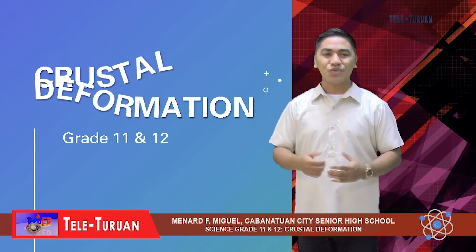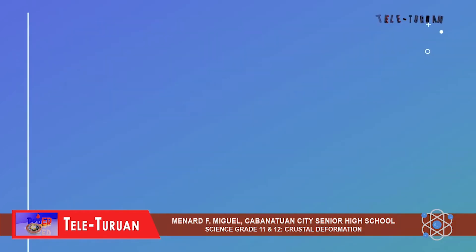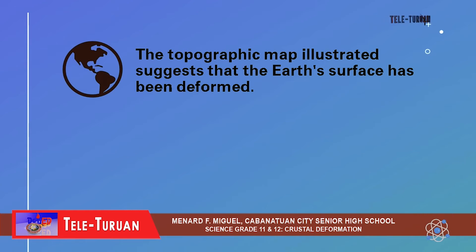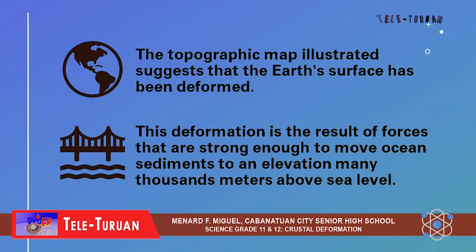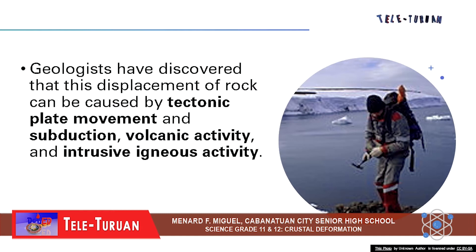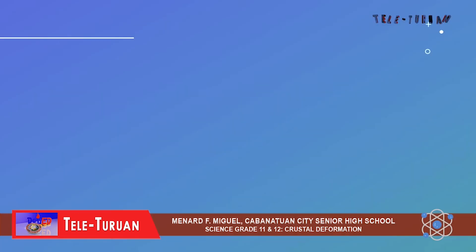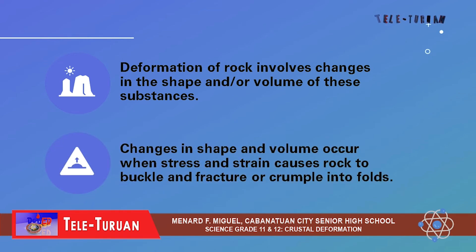Hi everyone and welcome back to Teleturuan. Let us continue with the movement of plates that leads to the formation of folds and faults. The topographic map illustrated below suggests that the Earth's surface has been deformed. This deformation is the result of forces strong enough to move ocean sediments to an elevation many thousands of meters above sea level. Geologists have discovered that this displacement of rock can be caused by tectonic plate movement and subduction, volcanic activity, and intrusive igneous activity. The formation of rock involves changes in the shape and/or volume of these substances.